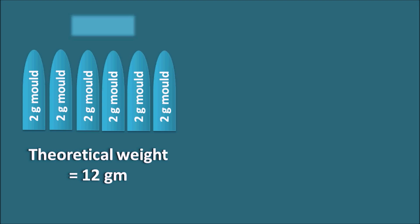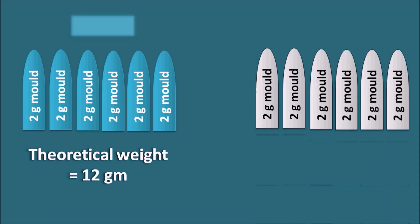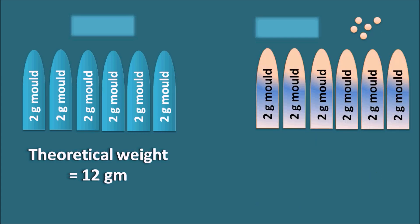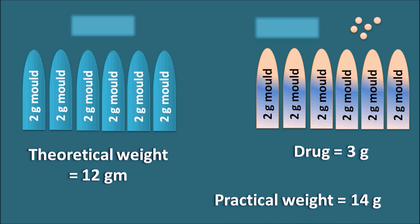Now let us see what happens practically. In these 6 suppositories we add both the base and the medicament, so each suppository contains both drug and base. Suppose we add 500 mg of the drug in each suppository; the total amount of drug in all 6 suppositories is 3g. When these 6 suppositories are weighed practically, if we get a practical weight of 14g, then the weight of the base is 14 − 3 = 11g.